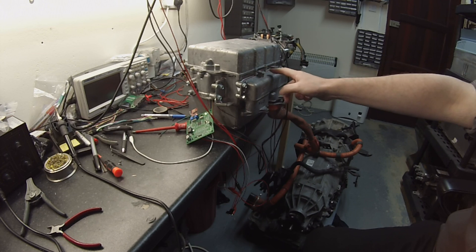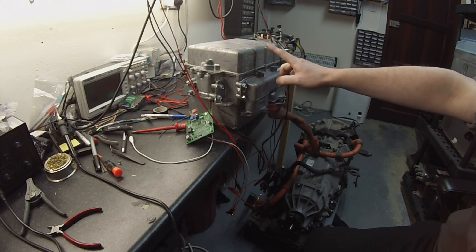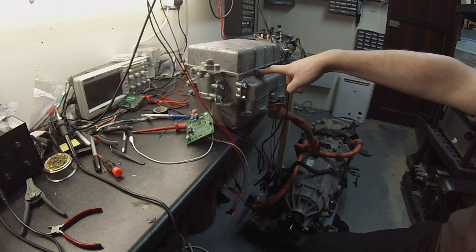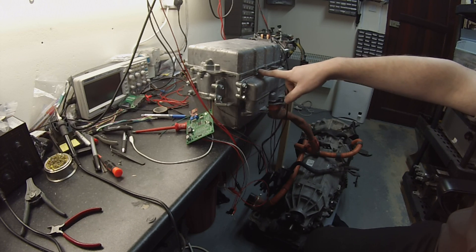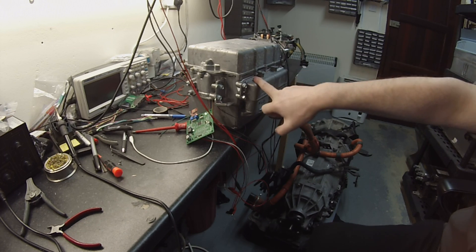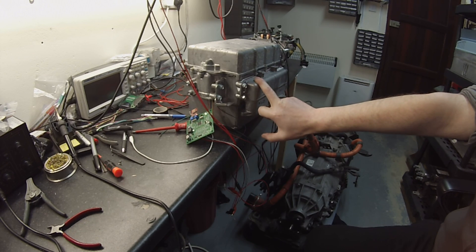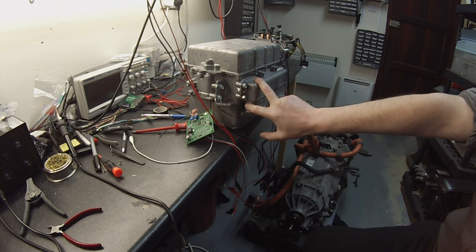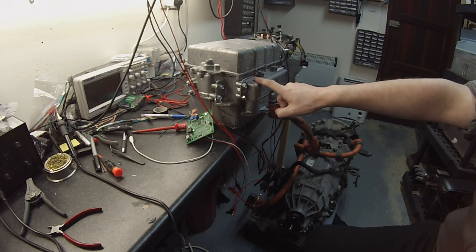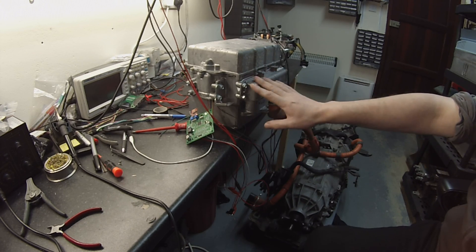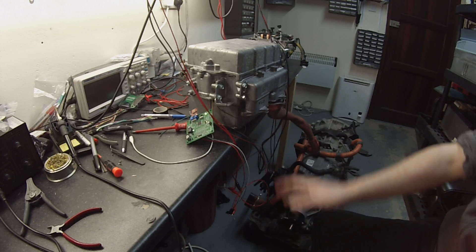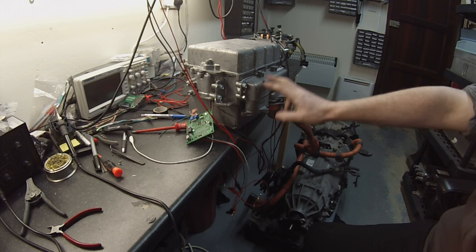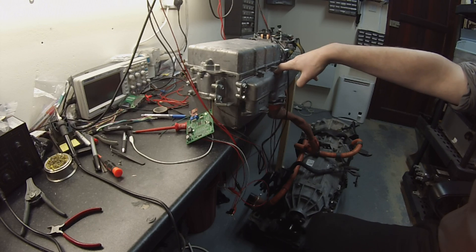With this particular iteration of Toyota inverter they use one drive signal per leg. So when the signal floats high the low side is on, and when you pull the signal low the high side comes on. So they do their own dead time and all that kind of thing. Three signals for MG2, three signals for MG1.